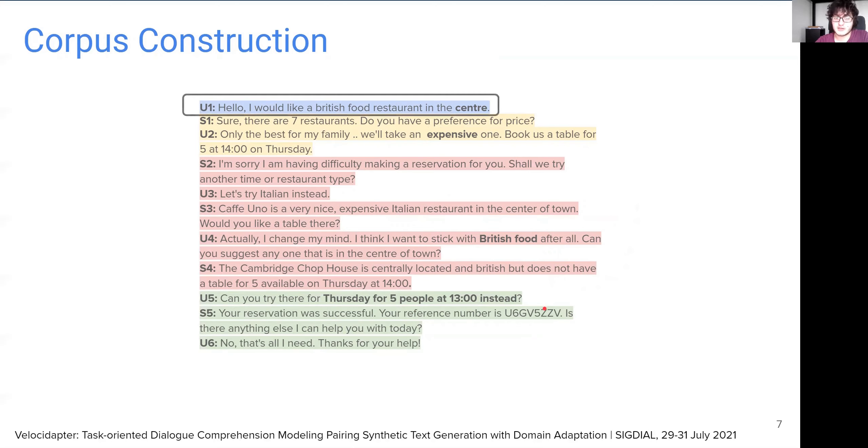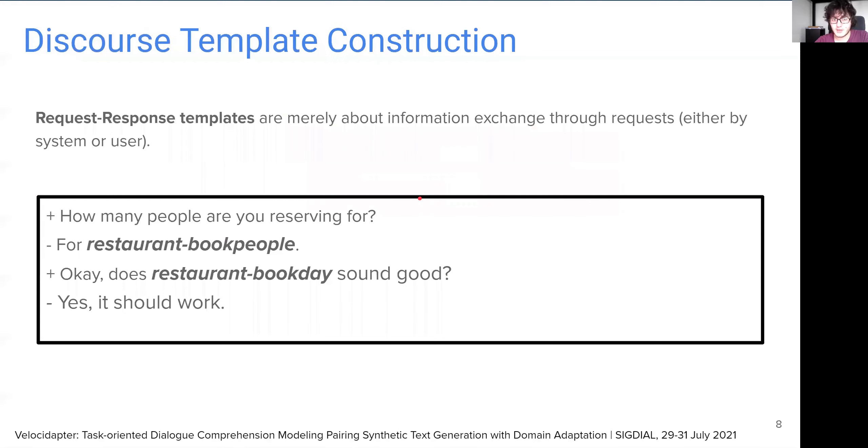Discourse templates come in two different forms. The first one is salutation or farewell, which, as the name suggests, forms the beginning or ending of a dialogue. And then comes request-response. Request-response templates are merely about information exchange through queries, either by the system or the user. The sample request-response template here, for example, involves the information on number of people for the reservation and the reservation day.